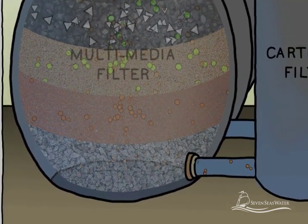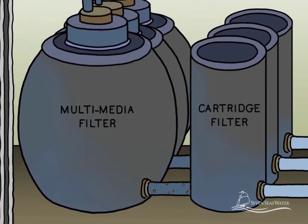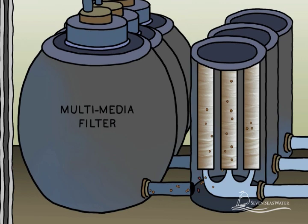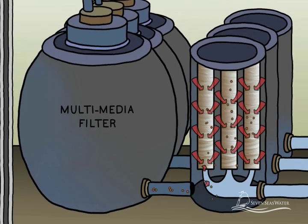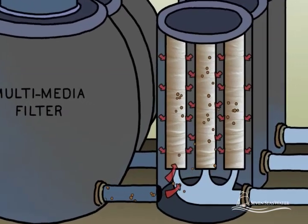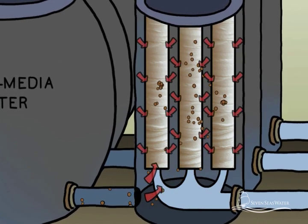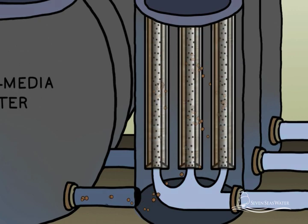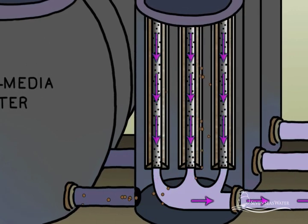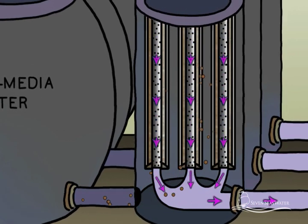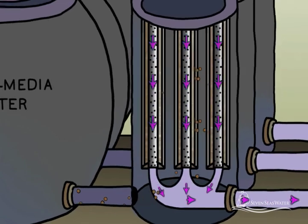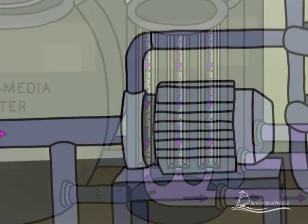Next, the filtered seawater travels to the cartridge filters, which act as a second stage of filtration. Cartridge filters used for seawater reverse osmosis are typically made from a yarn-like synthetic material that is wound into cartridges. These remove even smaller solid particles from the seawater, such as fine sand and clay, before the seawater proceeds to the reverse osmosis membranes.